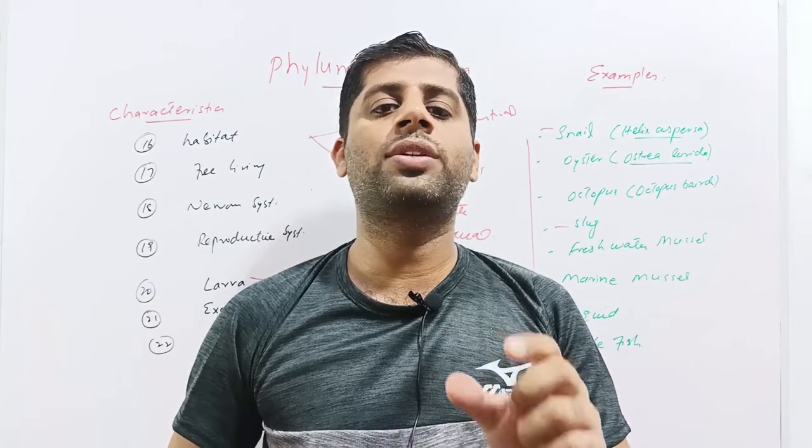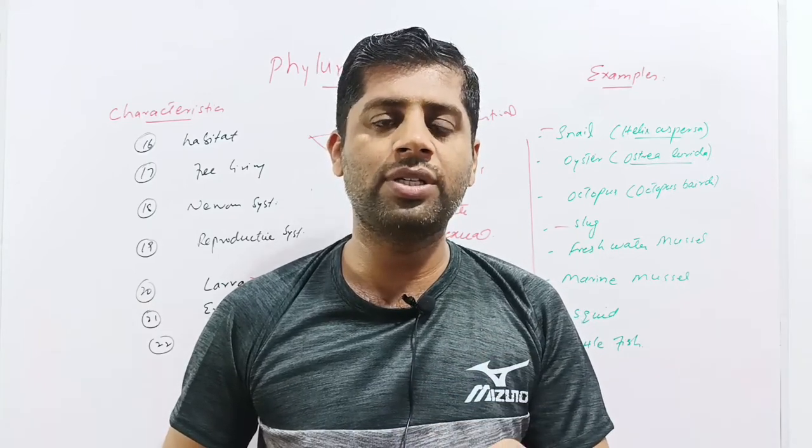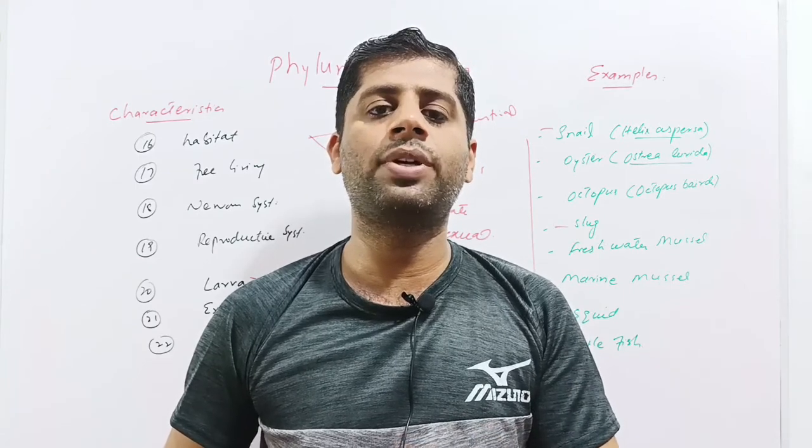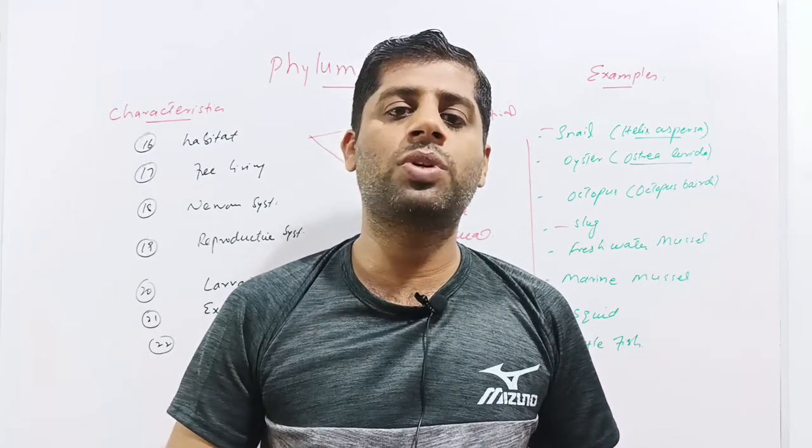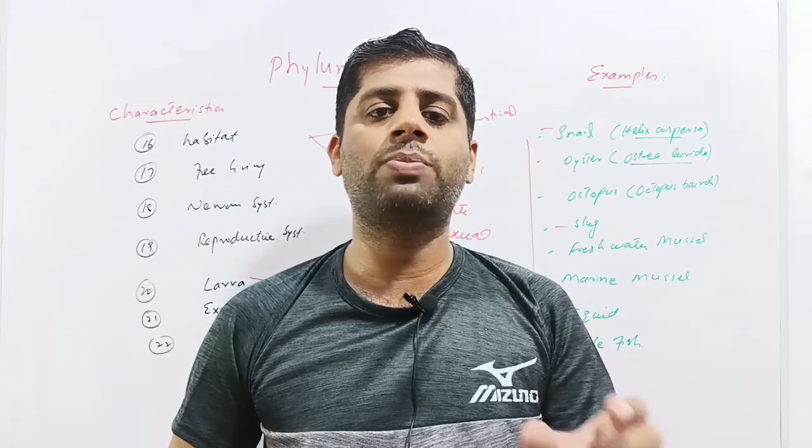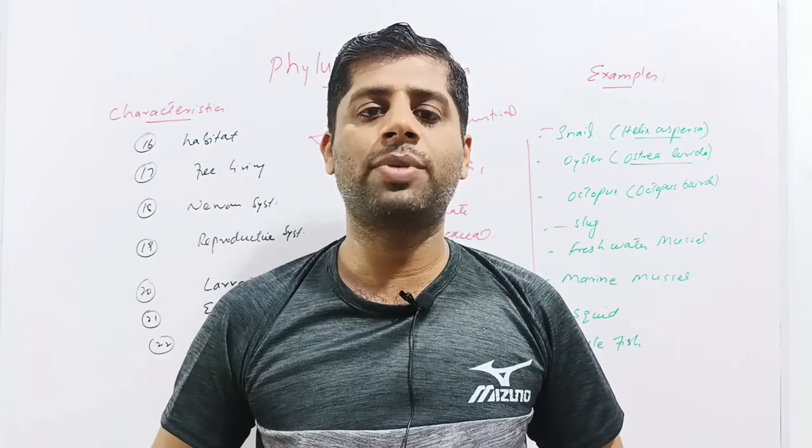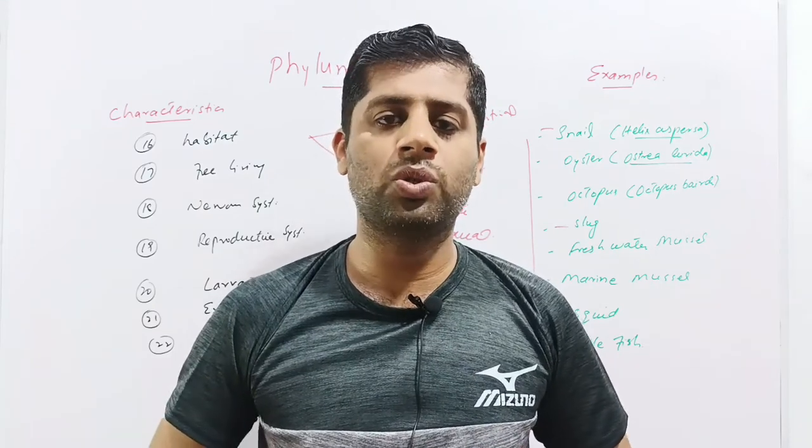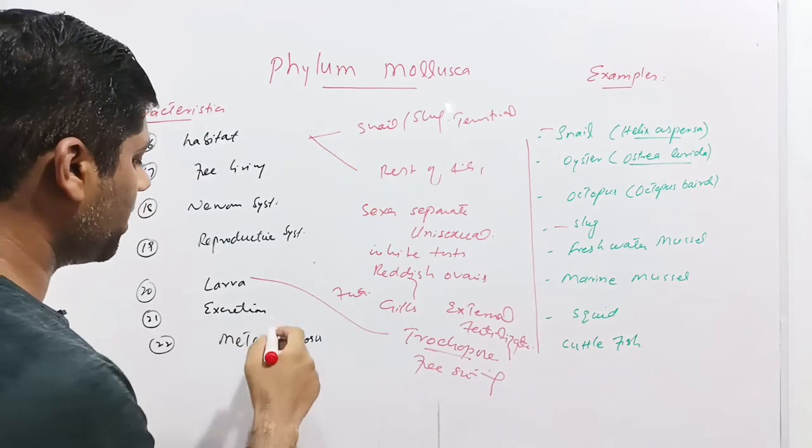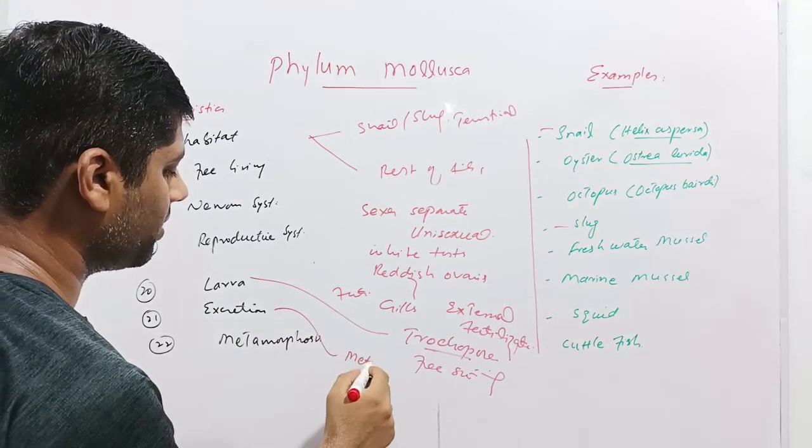And then this larva starts molting. It undergoes growth and development and attains the shape of the adult. So this whole process of developmental stages right from the fertilization of the ova till the development of the adult stage is called metamorphosis. So molluscs also show the metamorphosis mechanism. Next is the excretion. These have specialized organs for excretion. These are called metanephridia.